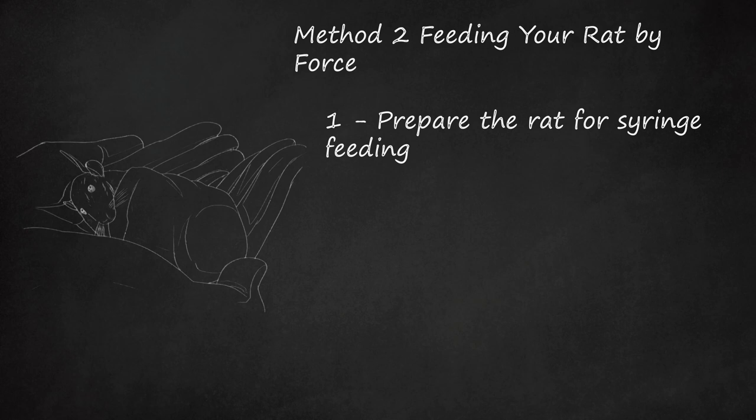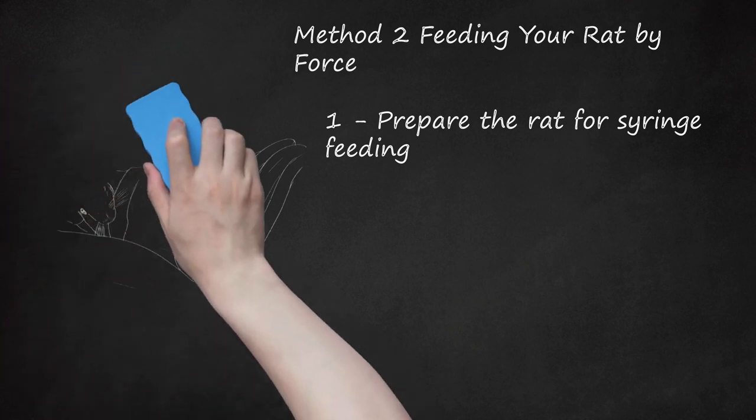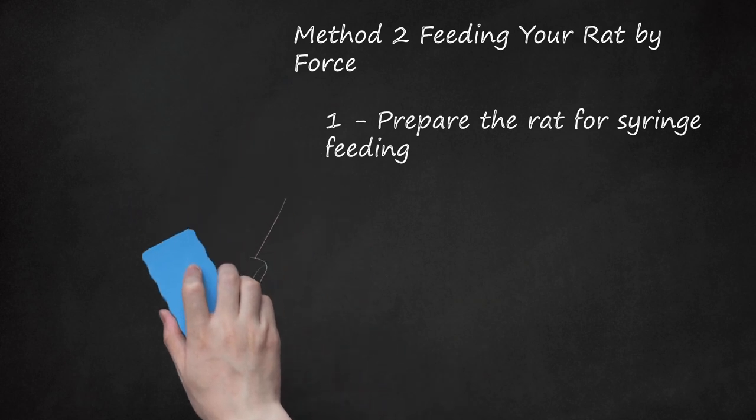You can simply hold your rat with one hand. Pick him up with your non-dominant hand and place your thumb and forefinger around his chest, keeping these fingers under his front legs. Some people find placing their rat on their lap or chest works well. If your rat is social and enjoys climbing on you, this may help keep him calm.